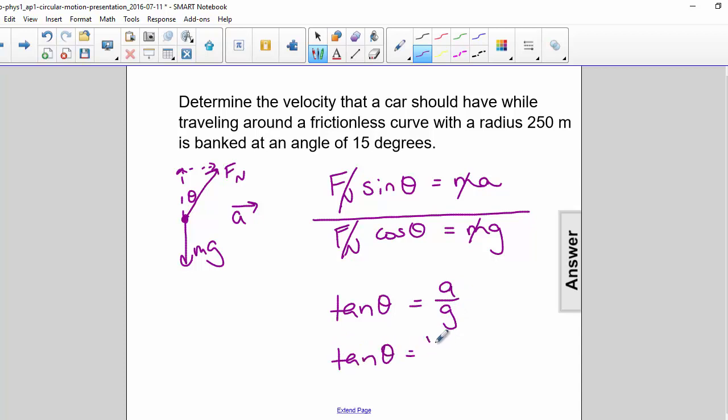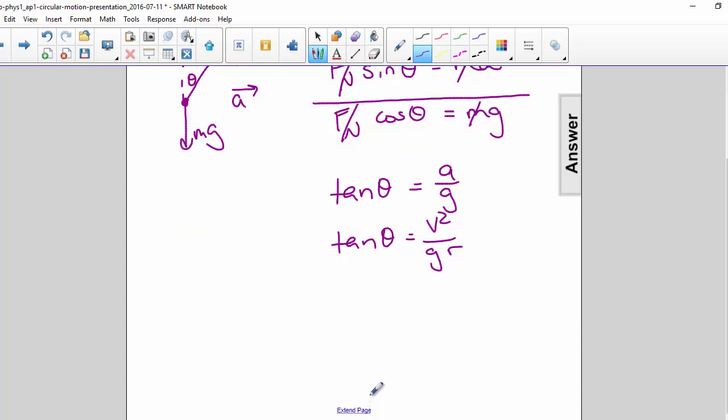Now a is equal to v squared over r. So to find v, we're going to multiply by gr and take the square root. So v is equal to the square root of gr tan theta.